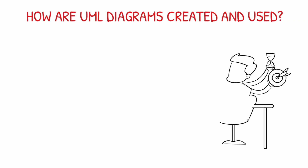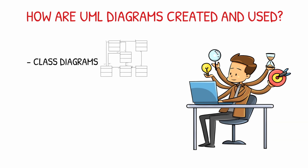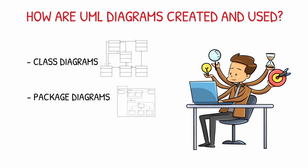How are UML diagrams created and used? Creating diagrams is dependent on the tools we use, and the type we can use in a variety of ways. However, there are some standards to follow. Class diagrams are the backbone of almost every object-oriented method, including UML — they describe the static structure of a system. Package diagrams are a subset of class diagrams, but developers sometimes treat them as a separate technique. Package diagrams organize elements of a system into related groups to minimize dependencies between packages.